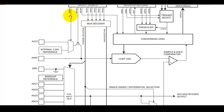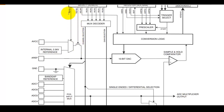If you select both Reference Selection 1 and Reference Selection 0 equal to 0, then the analog reference pin will be selected. If you set Reference Selection 1 to 1 and Reference Selection 0 to 0, then the analog VCC will be selected as the reference.